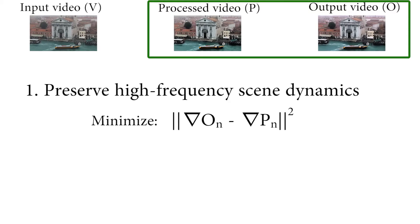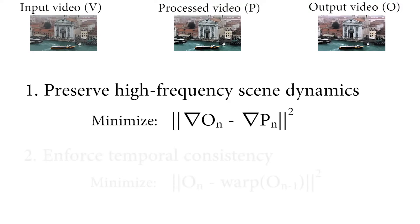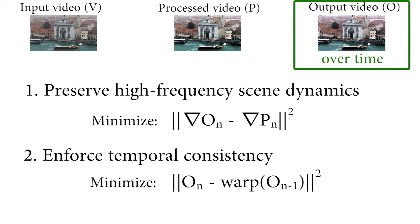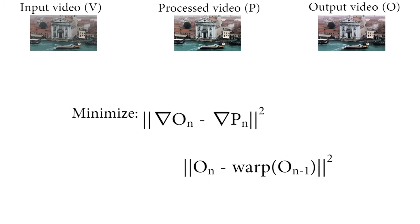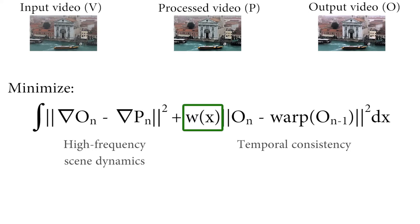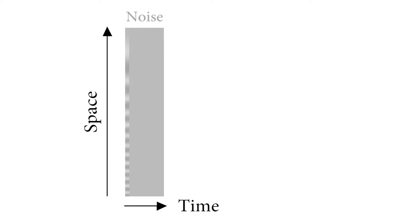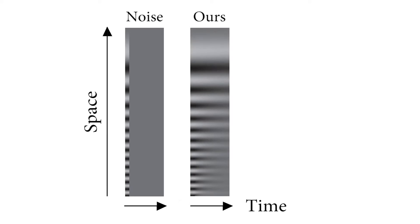The second part maintains temporal consistency by minimizing the difference in time between frames via optical or feature flows in the output. Key to this is our temporal consistency weight, which is obtained from the original input video flow. This allows us to only impose temporal consistency when the input video itself is also temporally consistent. In the paper we show with a frequency domain analysis that this gradient-based formulation allows us to regularize low frequencies more than high frequencies, which preserves broad scene properties while allowing details to change quickly.